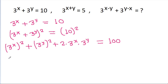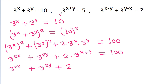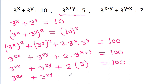3 power x squared will be 3 power 2x, and 3 power y squared will be 3 power 2y, plus 2 times 3 power x into 3 power y, which is 3 power x plus y, equal to 100. So 3 power 2x plus 3 power 2y plus 2 times 5 equals 100, giving us 3 power 2x plus 3 power 2y equals 90. This is equation 1.